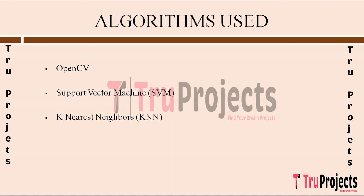KNN is a straightforward algorithm for classification including face recognition. It works by finding the closest data points — that is, faces — in the feature space and assigns the input face to the class most common among its nearest neighbors. KNN is suitable for this project due to its simplicity, computational efficiency, and robustness to noise, making it effective for small to medium-sized datasets and varying facial expressions and lighting conditions.